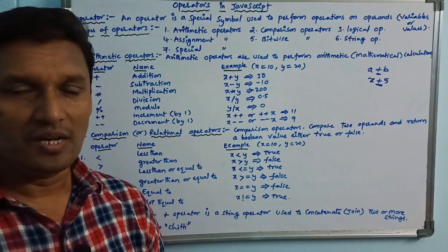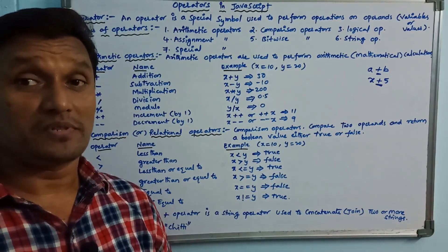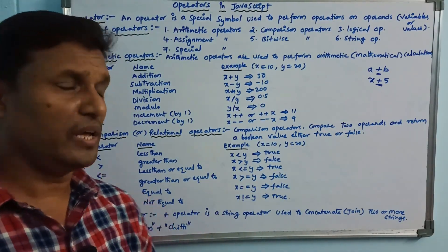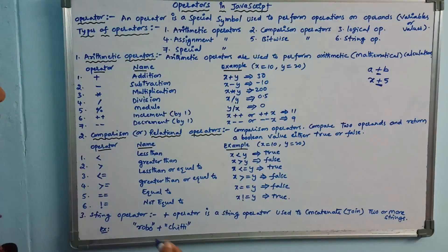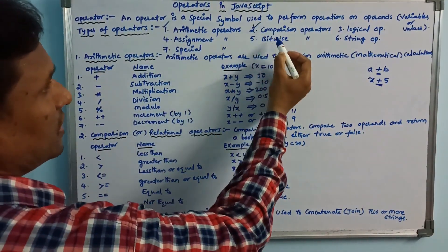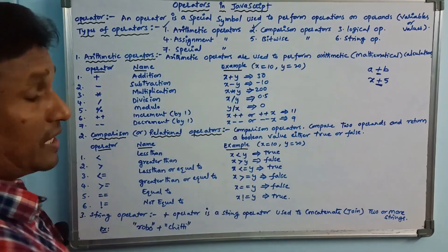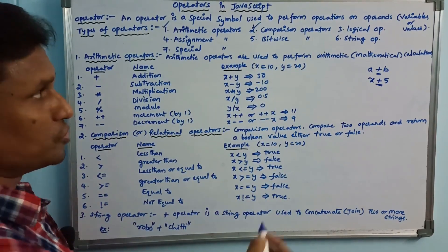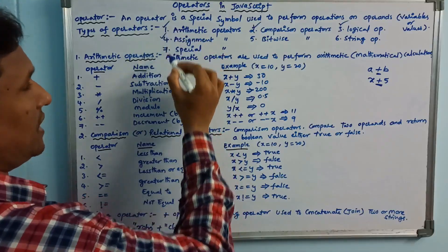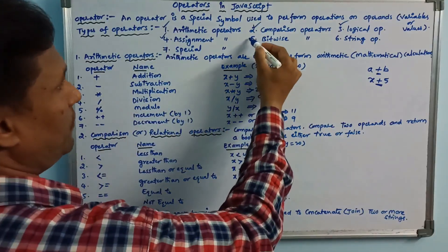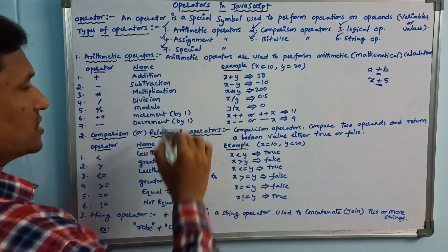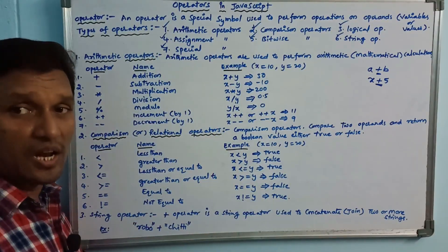The types of operators are: comparison operators, also known as relational operators, logical operators, assignment operators, bitwise operators, string operators, and special operators.